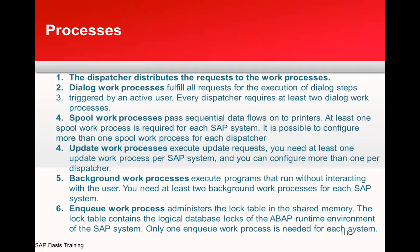Spool work processes pass sequential data flows to the printers. At least one spool process is required, though you can configure more than one per dispatcher. Update work processes execute update requests. You need at least one update work process per system and can configure more than one per dispatcher.